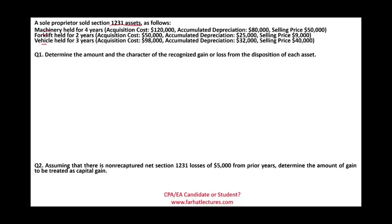The question is: determine the amount and the character of the recognized gain or loss for the disposition of each asset. In a CPA simulation you may have a drop-down box asking how much of the gain or loss is taxable, how much is not taxable, and what type of character it is — ordinary income or capital gain.